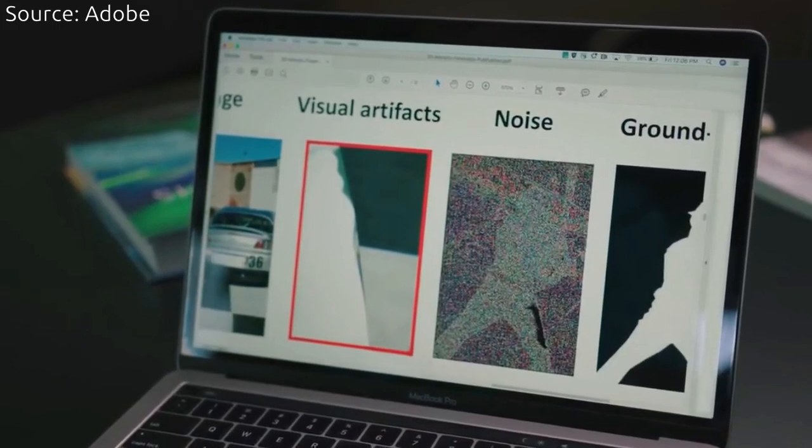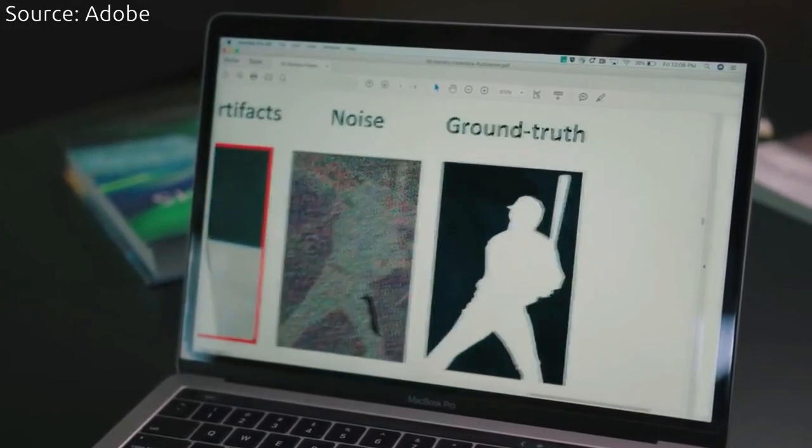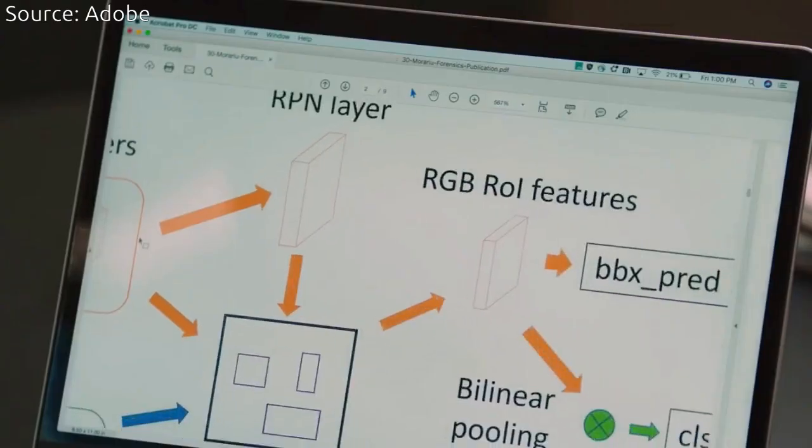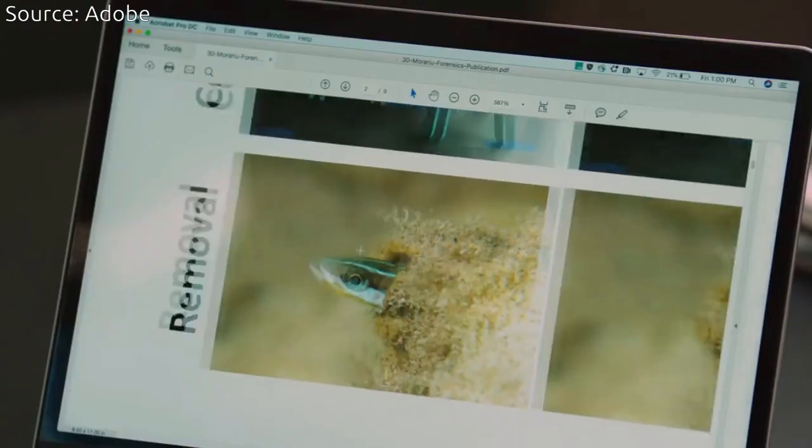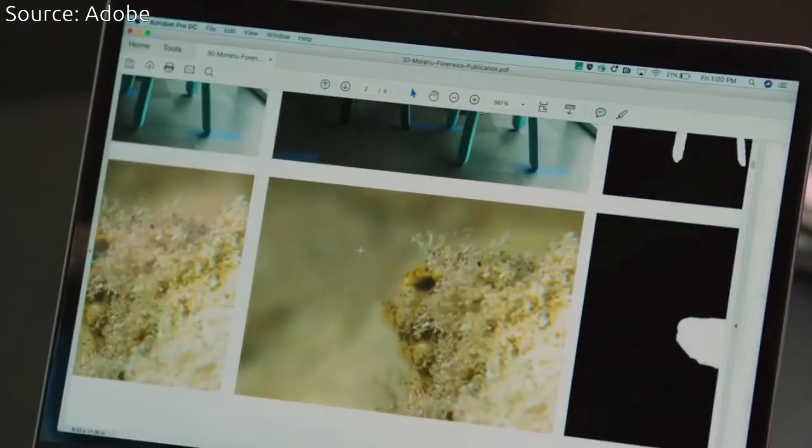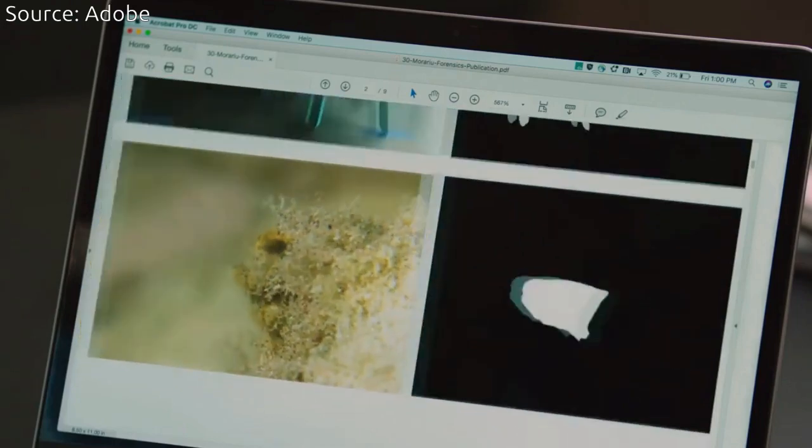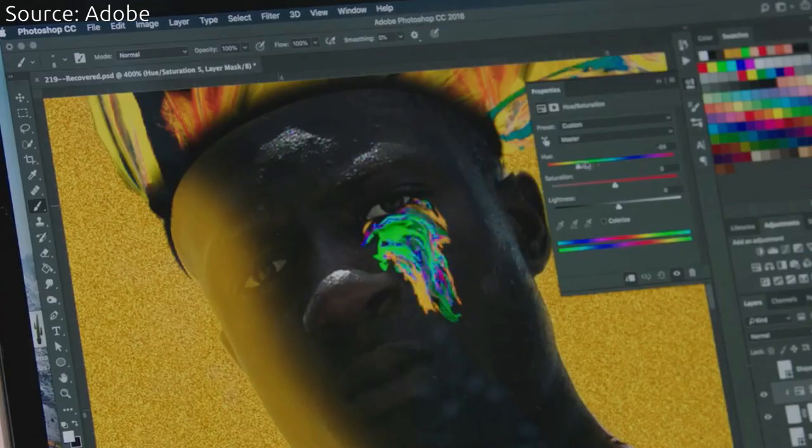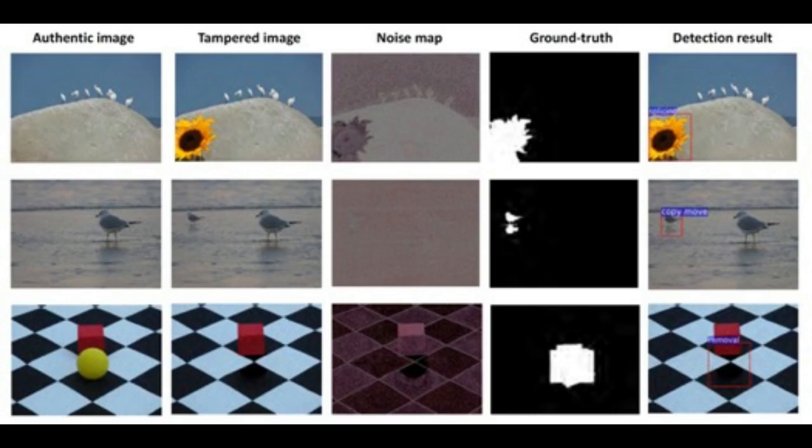Every time an image is manipulated, it leaves behind clues that can be studied to understand how it was altered. Each of these techniques tend to leave certain artifacts, such as strong contrast edges, deliberately smoothed areas, or different noise patterns.